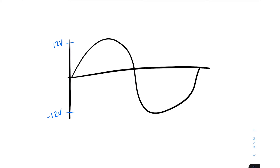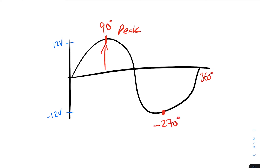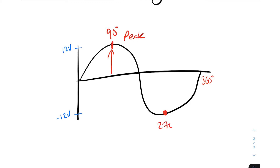There are some other things to think about in terms of how we describe amplitude. The first and most obvious one is the peak. The peak voltage or peak current is the furthest point away from the mean average of the waveform — it's the highest amount of voltage or current. In this instance we've got 12 volts, so the peak voltage is 12 volts. The peak is always going to be at 90 degrees of the sine wave, and the reverse peak is always going to be at 270 degrees.